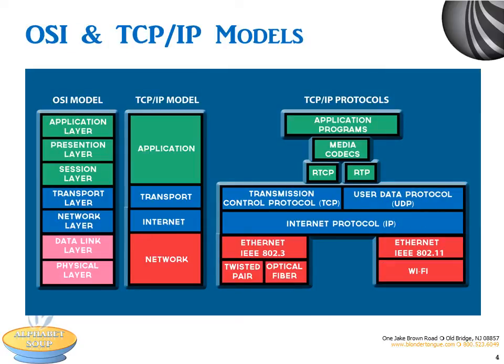Here is an expanded model to give you a visual on how all this fits together. As a reminder, the OSI model is a standard reference for communication between two end users in a network. The OSI model defines a networking framework for implementing protocols according to layers. Each layer is functionally independent of the others, but provides services to the layer above it and receives services from the layer below it. This diagram shows you the correlation of TCP/IP and the OSI model.